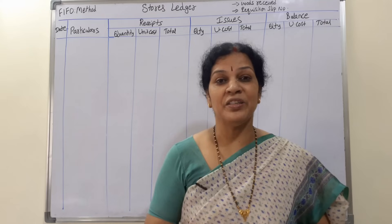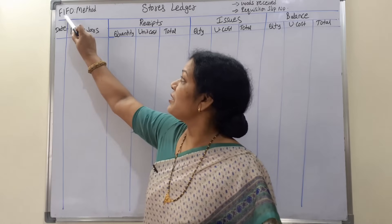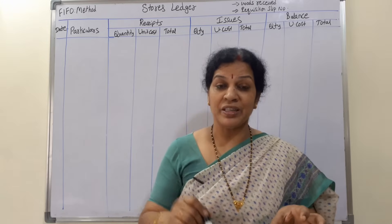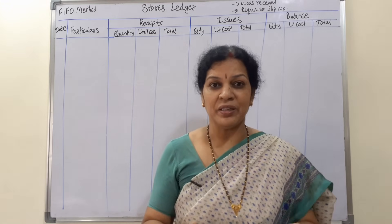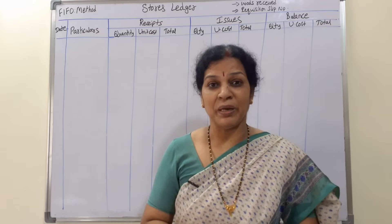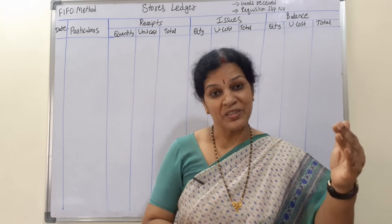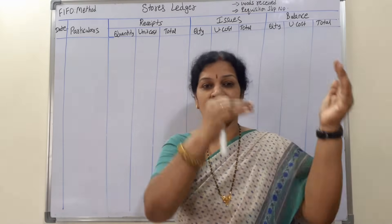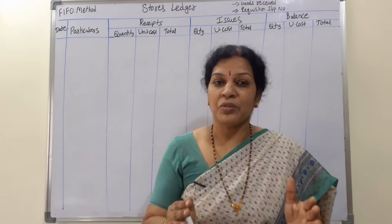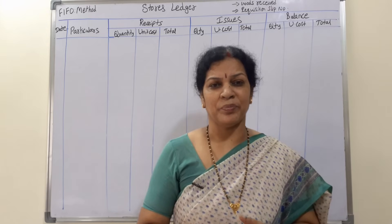FIFO means First In First Out. In the FIFO method, whatever material we receive first, that material is to be issued first. At the second stage, when we buy more material, we issue it only after the first stage material is fully issued. Whatever we get first is to be issued first — that is the FIFO method. We will work through a problem to make it clear.